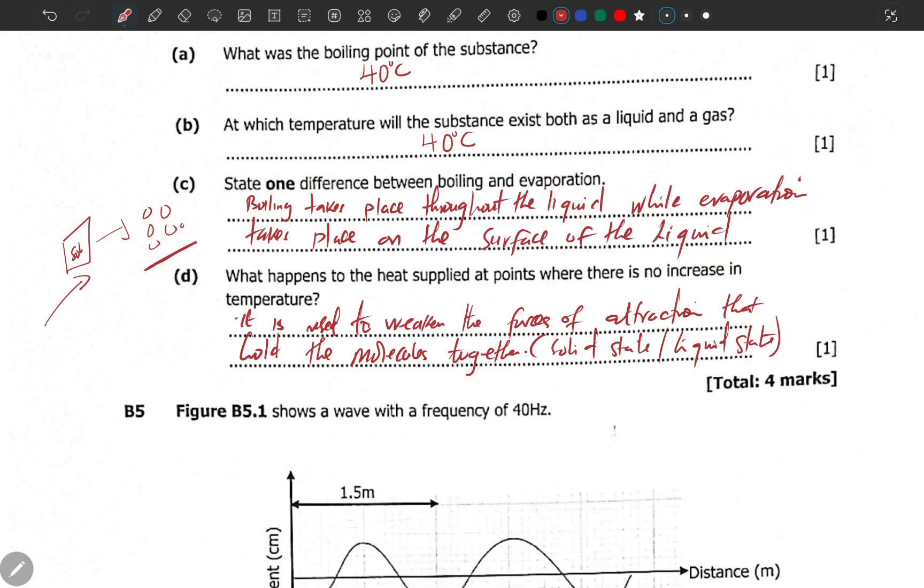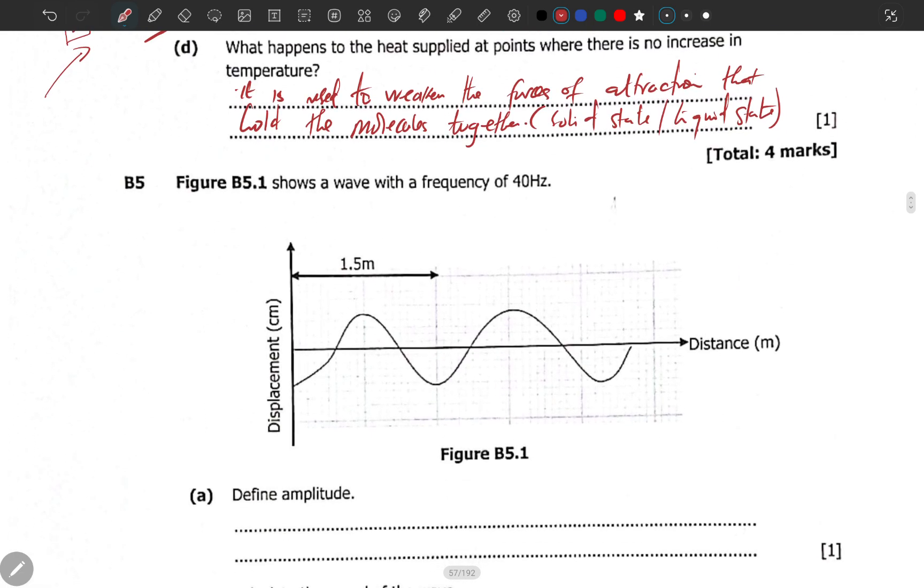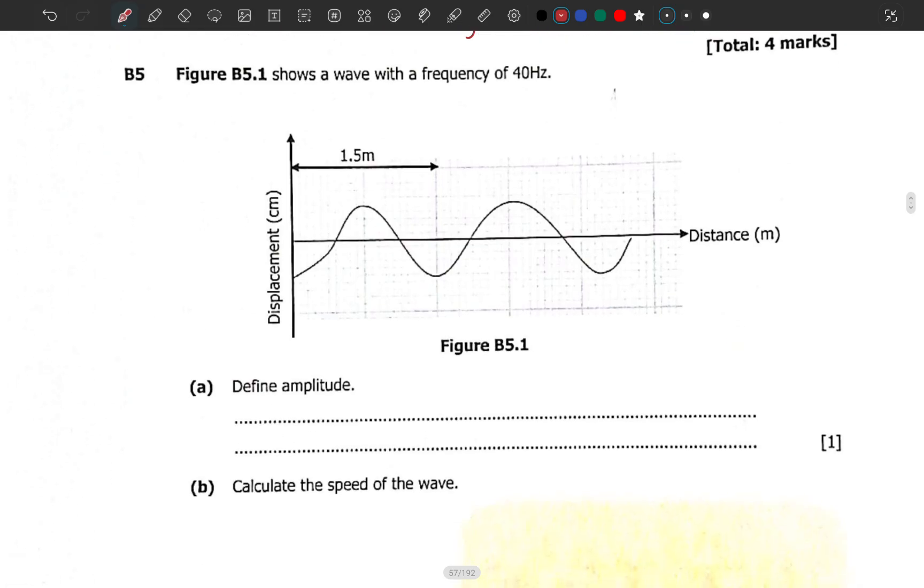You are done. Should you progress to B5? Let's go. This would be the last one. Figure B5.1 shows a wave with a frequency of 40 hertz. So the frequency is 40 hertz. Please take note here, you've got displacement here, you've got distance. These two are too different because displacement is a vector quantity and distance is a scalar quantity. Take note of that little difference.